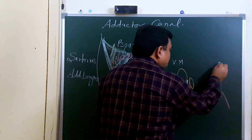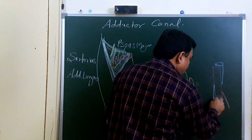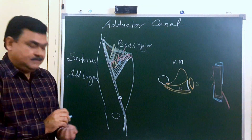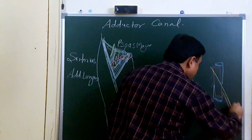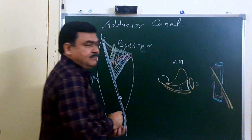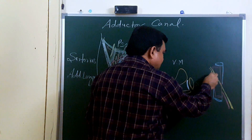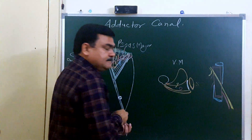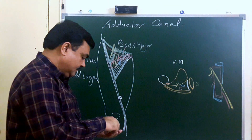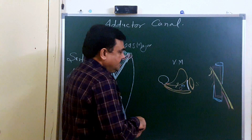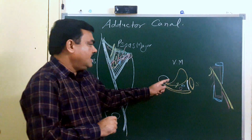Another structure lies deep to this — this is the femoral vein. The nerve to vastus medialis is also a content of the adductor canal. So these structures — the femoral artery, femoral vein, and nerve to vastus medialis — form the contents of the adductor canal.